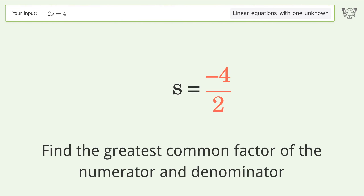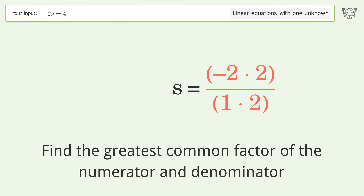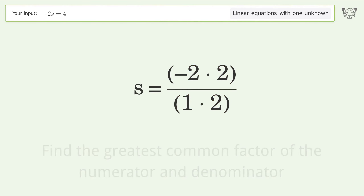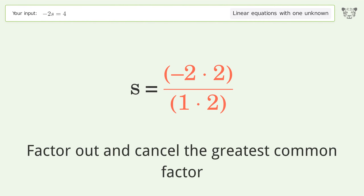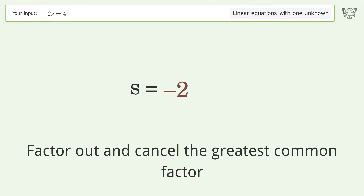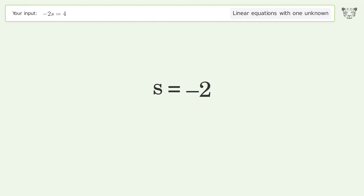Find the greatest common factor of the numerator and denominator. Factor out and cancel the greatest common factor. And so the final result is s equals negative 2.